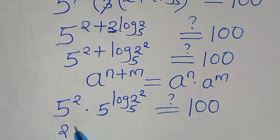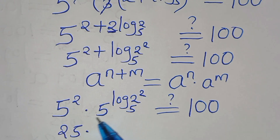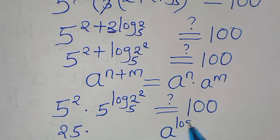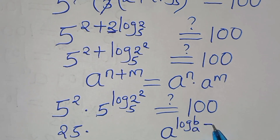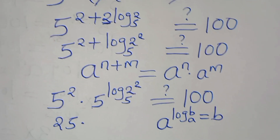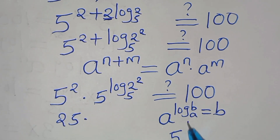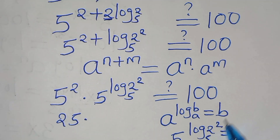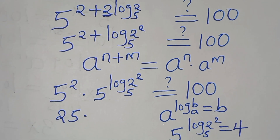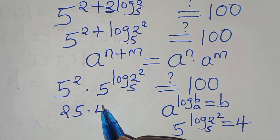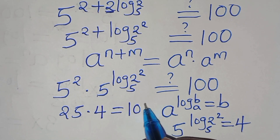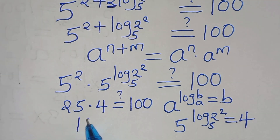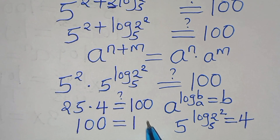So 5 squared is 25, times 5 to the power of log(2²) to base 5. This is in the form of a raised to the power of log(b) to base a, which gives us b. So 5 to the power of log₅(2²) gives us 2 squared, which equals 4. Therefore we have 25 times 4, which should give us 100. And indeed 25 times 4 equals 100, which equals 100.